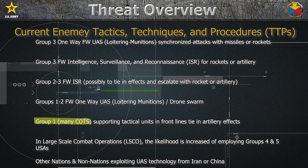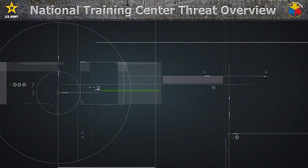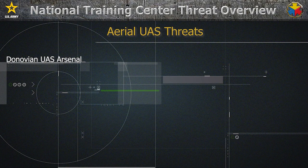To make matters worse, Group 1 UASs are hard to detect and increasingly commercial off-the-shelf, meaning UASs are no longer a tool for just state actors, but also non-state actors — anyone can buy and fly them with minimum effort. The likelihood of UAS Groups 4 and 5 performing ISR on friendly locations increases as we see more large-scale combat in different theaters. Finally, we see on open source another trend: nations and non-nation states have been responsible for drone threats and attacks utilizing UAS technology from Iran or China.